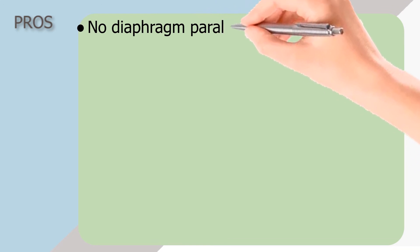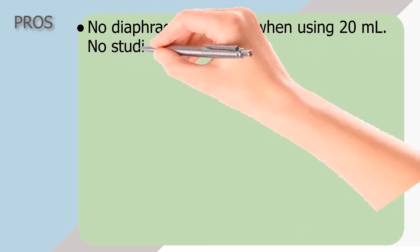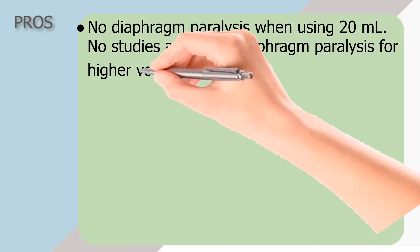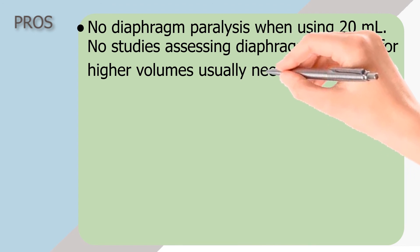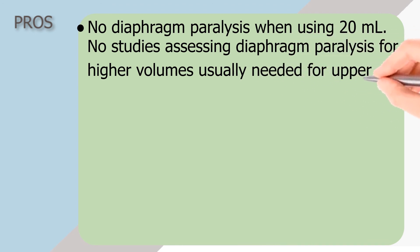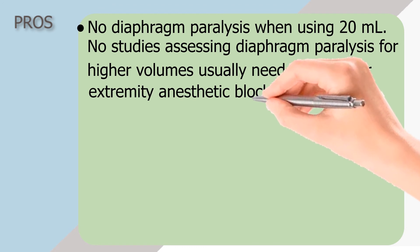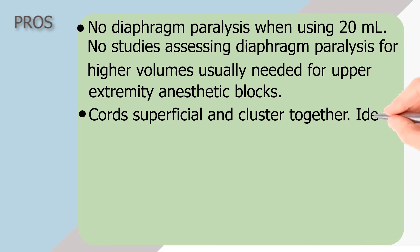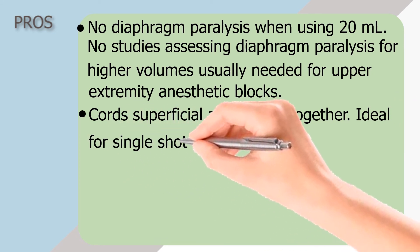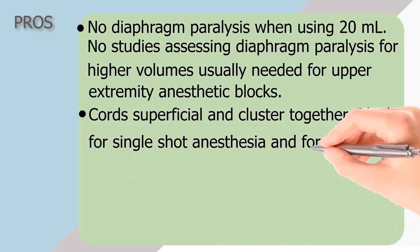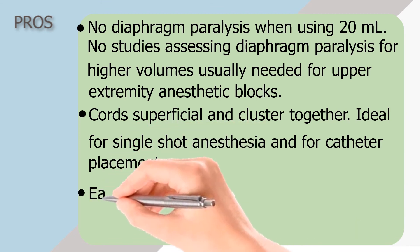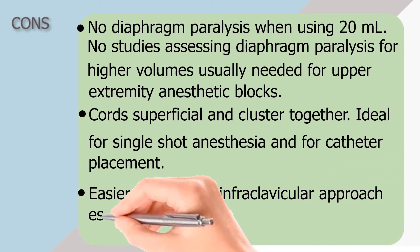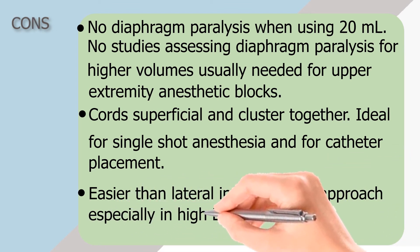PROS: No diaphragm paralysis when using 20 mL. No studies assessing diaphragm paralysis for higher volumes usually needed for upper extremity anesthetic blocks. Cords are superficial and clustered together, making this ideal for single shot anesthesia and for catheter placement. The approach is easier than the lateral infraclavicular approach, especially in patients with high BMI.